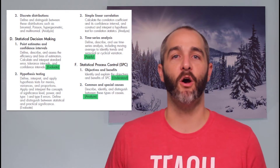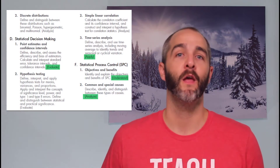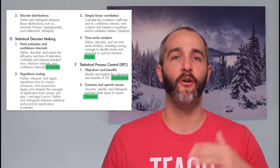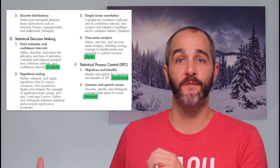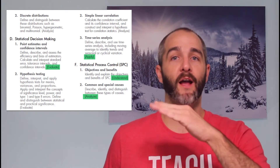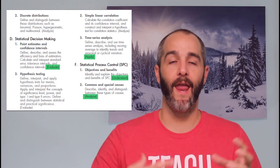It also tells you how well you need to know each topic — this is called the cognition level. Essentially this is based on Bloom's taxonomy, a hierarchy of learning. Some topics you just need to understand; some you have to be able to apply; and some you have to be able to analyze data or a problem using that particular tool. The body of knowledge really helps you understand what you need to know and how well you need to know it.